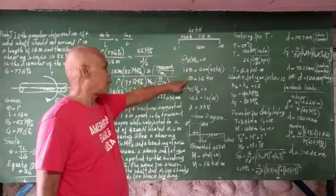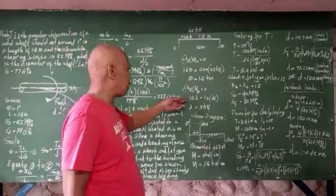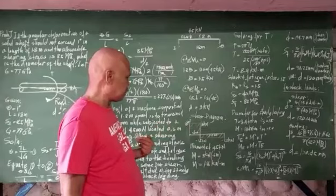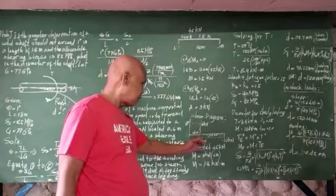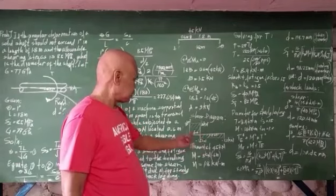Taking the summation of moment at A equal to 0, we have B equal to 1.5 kilo newtons. Taking the summation of moment at B equal to 0, we have reaction at A equal to 3 kilo newtons. Having the reactions, we can now draw and project the shear diagram. From the diagram, we take the moment at the line of action of the load, which is 0.6 meters from A.